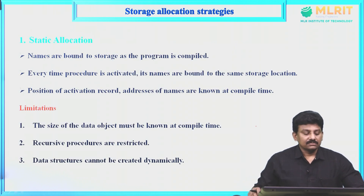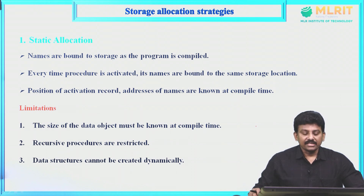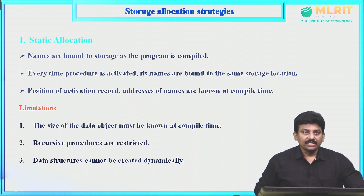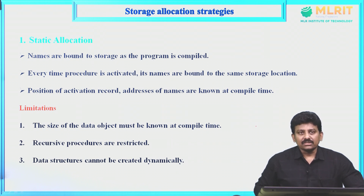In static allocation, names are bound to storage locations as the program is compiled. Every time a procedure is activated, its names are bound to the same storage locations. The position of the activation record and addresses of names are known at compile time. The limitations are: the size of the data object must be known at compile time, recursive procedures are not allowed because they require fresh storage allocation for each procedure call, and data structures cannot be created dynamically.